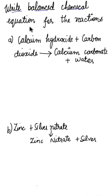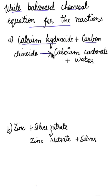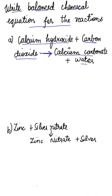The question is to write balanced chemical equations for the given reactions. Part A is calcium hydroxide plus carbon dioxide. The things written before the arrow are known as reactants, so calcium hydroxide and carbon dioxide are reactants, and the product will be calcium carbonate and water.